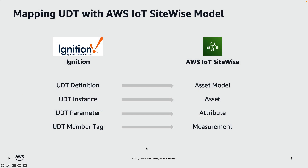Here we have the data source to the left and IoT SiteWise to the right. In this example, we are using Inductive Automation's Ignition system as our data source. Ignition transmits user-defined types as Sparkplug-compatible messages. IoT Bridge consumes these messages and then creates corresponding artifacts in IoT SiteWise, including an asset model that represents the class of an asset, the asset itself, an attribute that represents static data about the equipment like a serial number, and then a measurement to represent the time series data.